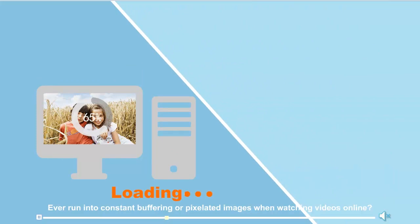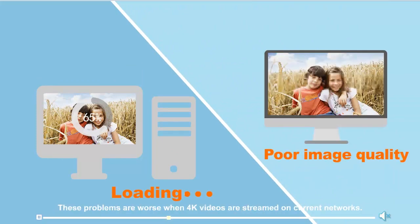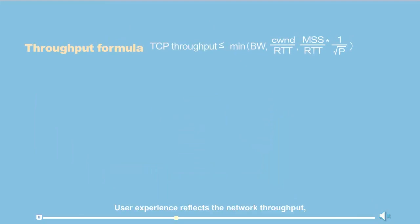Ever running into constant buffering or pixelated images when watching videos online? These problems are worse when 4K videos are streamed on current networks. User experience reflects network throughput, which mainly depends on network bandwidth, latency, and packet loss rates. Higher latency and packet loss rate cause smaller throughput.